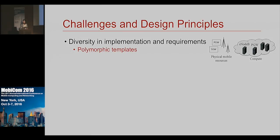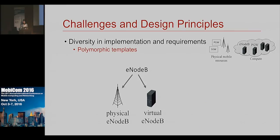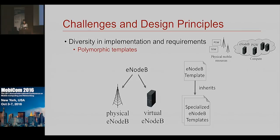Proteus has what we call polymorphic templates. This basically means we have, for example, a component such as an eNodeB or a base station, and we can either have a physical or a virtual eNodeB. We can have a generic eNodeB template and more specialized templates that mainly inherit from this generic template.